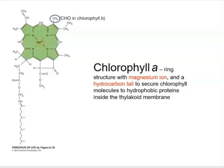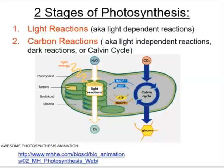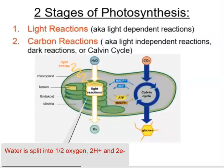Chlorophyll b is obtained by replacing the methyl group on chlorophyll a with an aldehyde, giving it a slightly different color. This slide is your roadmap for what we're going to discuss. There are two main stages of photosynthesis: light reactions and carbon reactions.